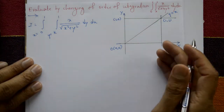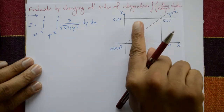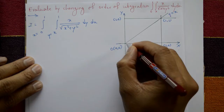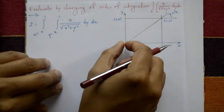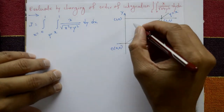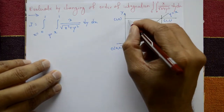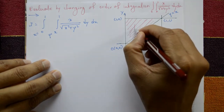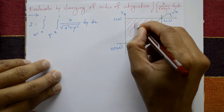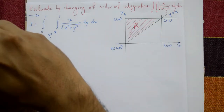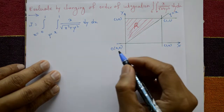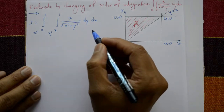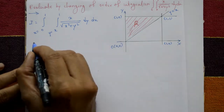x from 0 to 1 means left to right — that is this entire part. And y from x to 1 means this part — this is the common region R to calculate this area. Now change the order of integration.